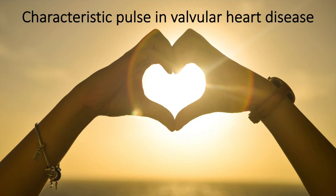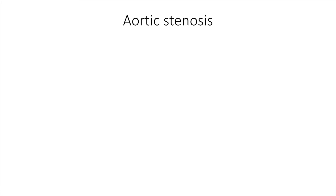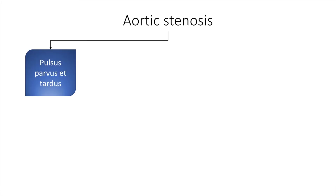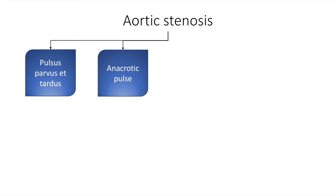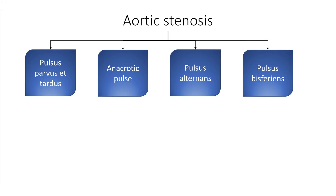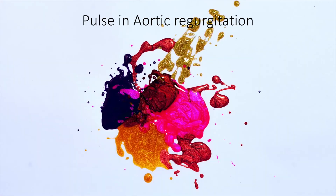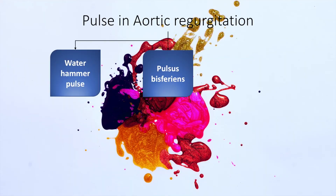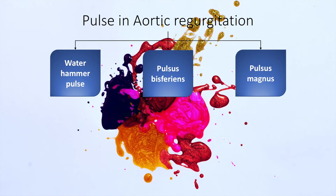In aortic stenosis, there is pulsus parvus et tardus, which is a slow rising pulse with delayed systolic peaking. The patient may also have an anacrotic pulse. There can be pulsus alternans if a patient with aortic stenosis develops left ventricular failure, and there can also be pulsus bisferiens in severe aortic stenosis. In aortic regurgitation, there can be a water hammer pulse, pulsus bisferiens, or pulsus magnus.